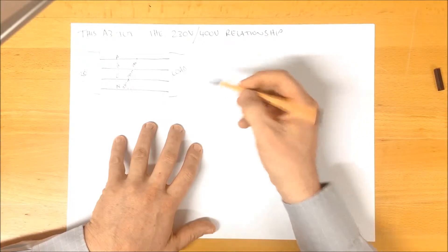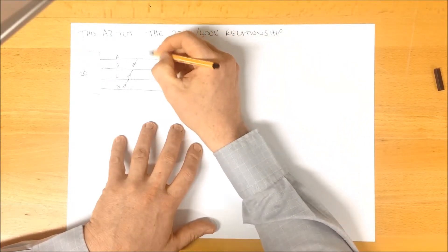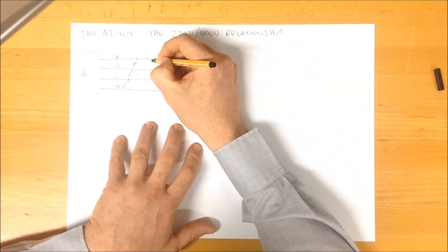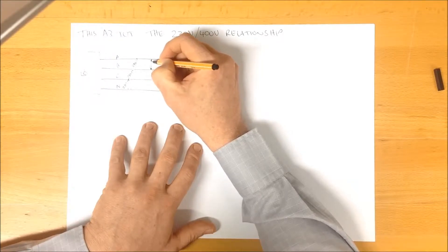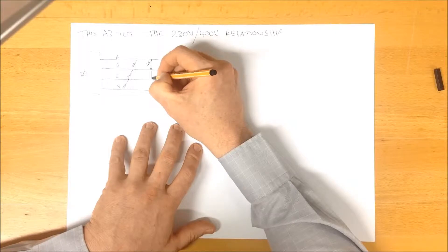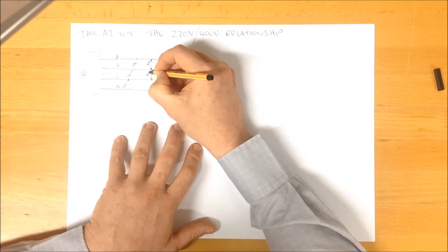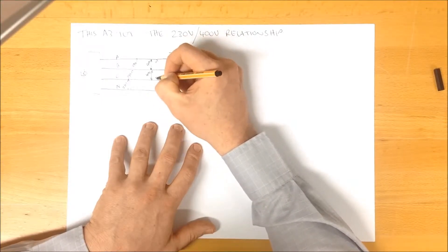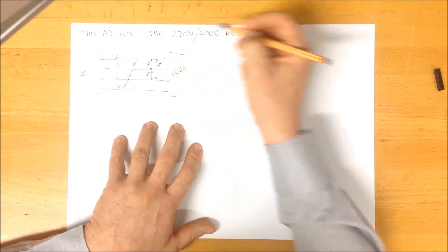If you measure the voltage between some of these, between for example say A and B, you'd measure 400. And if you'd measured between these two here, you'd measure 400 and between these two, you'd measure 400.